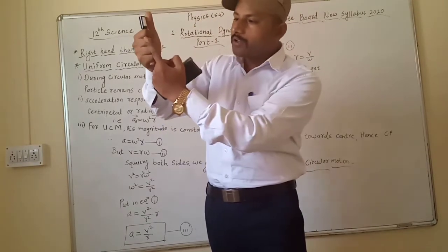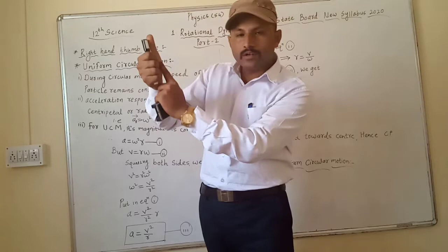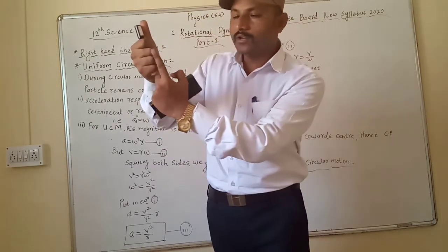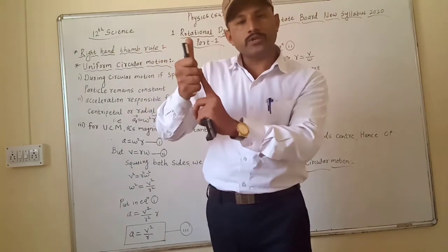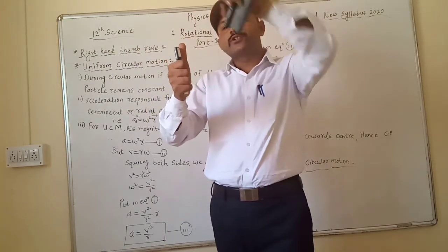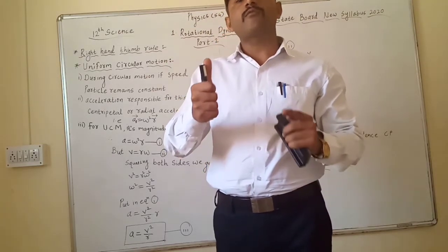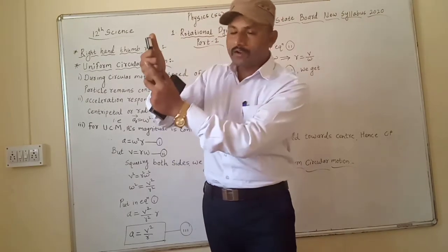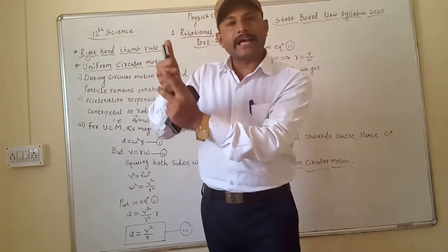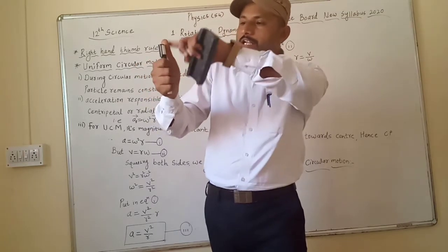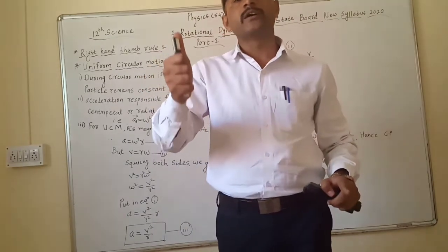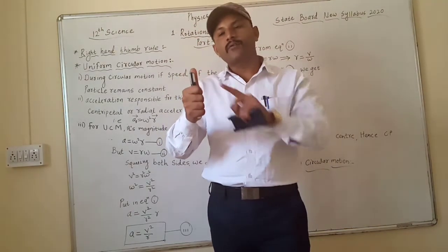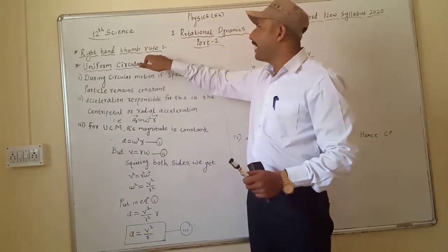The curved fingers give the direction of motion, and the outstretched thumb gives the direction of angular displacement, that is the omega vector. That is the right hand thumb rule.